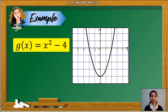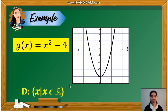Next example, we have g(x) is equal to x squared minus 4. Looking at the graph of this quadratic function, it is a parabola that opens upward and extends infinitely in the upward direction. It also extends infinitely to the left and to the right. Thus, the domain of this function is the set of real numbers. The parabola has a vertex at point (0, negative 4), and there are no points beyond negative 4 for y. Thus, the values of y are greater than or equal to negative 4.